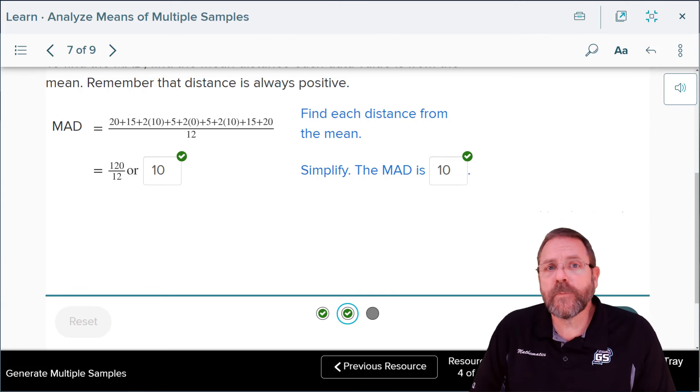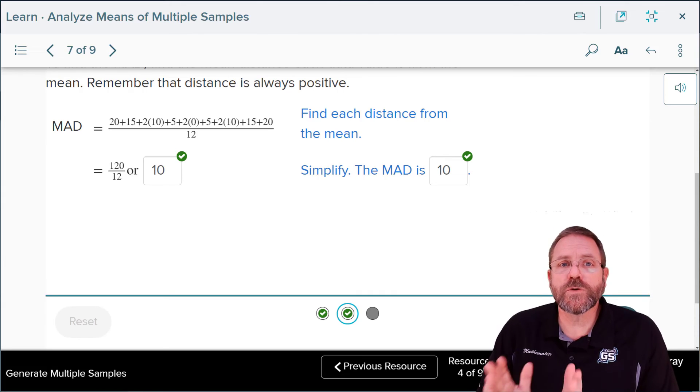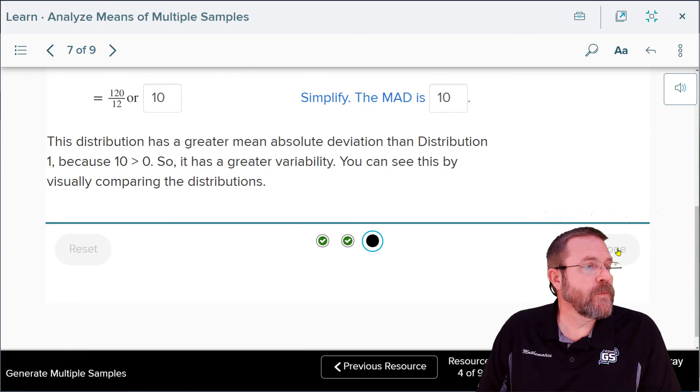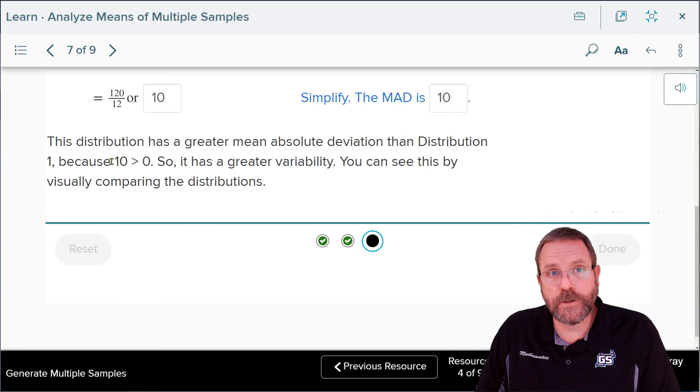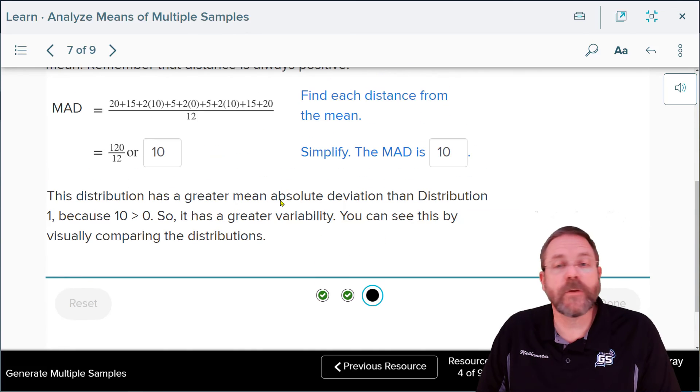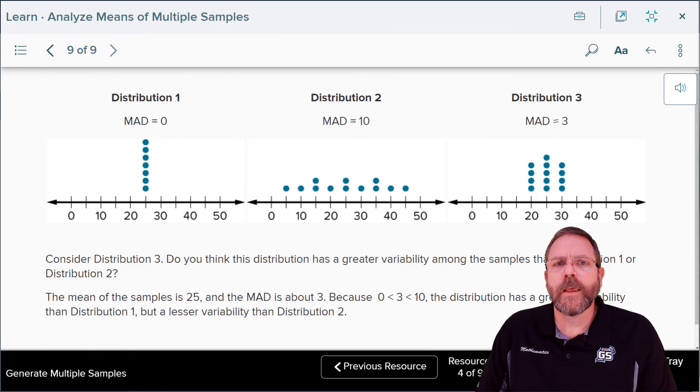Now, the last mean absolute deviation we had was 0, which showed there was no deviation. For this one, I'm thinking there's a pretty significant deviation. This distribution has a greater mean absolute deviation than the distribution in the first graph we looked at, number 1. 10 is greater than 0. Remember we had mean absolute deviation of 10 in this one and 0 in the first one, so it has greater variability. And you can see this by simply looking at the graph and visually comparing your data sets.